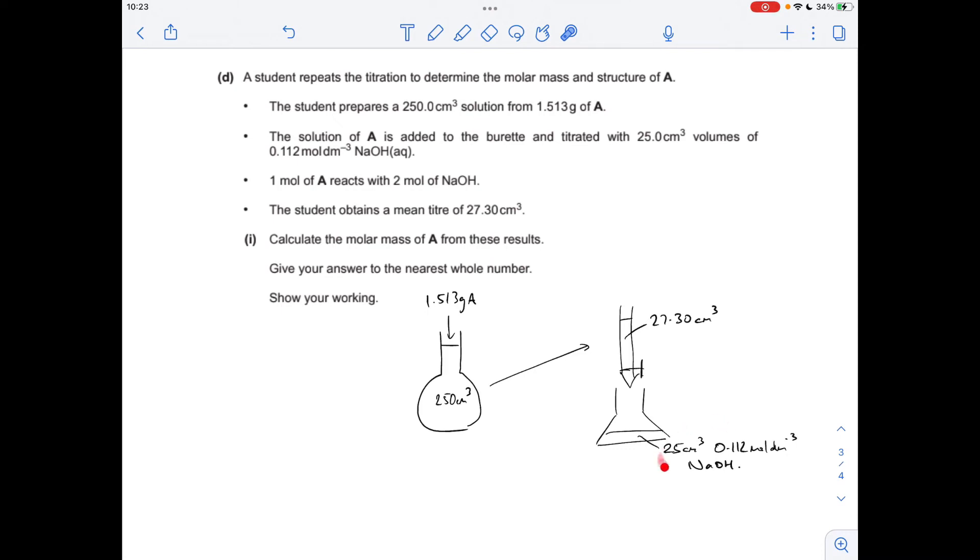So the first thing I'm going to do is work out the moles of sodium hydroxide, concentration times volume in decimeters cubed. That's coming out at 2.8 times 10 to the minus 3. The moles of the acid in this volume, this 27.30 cm cubed, is going to be half of that because we're told one mole of acid A reacts with two moles of NaOH. So obviously, that's 1.4 times 10 to the minus 3.